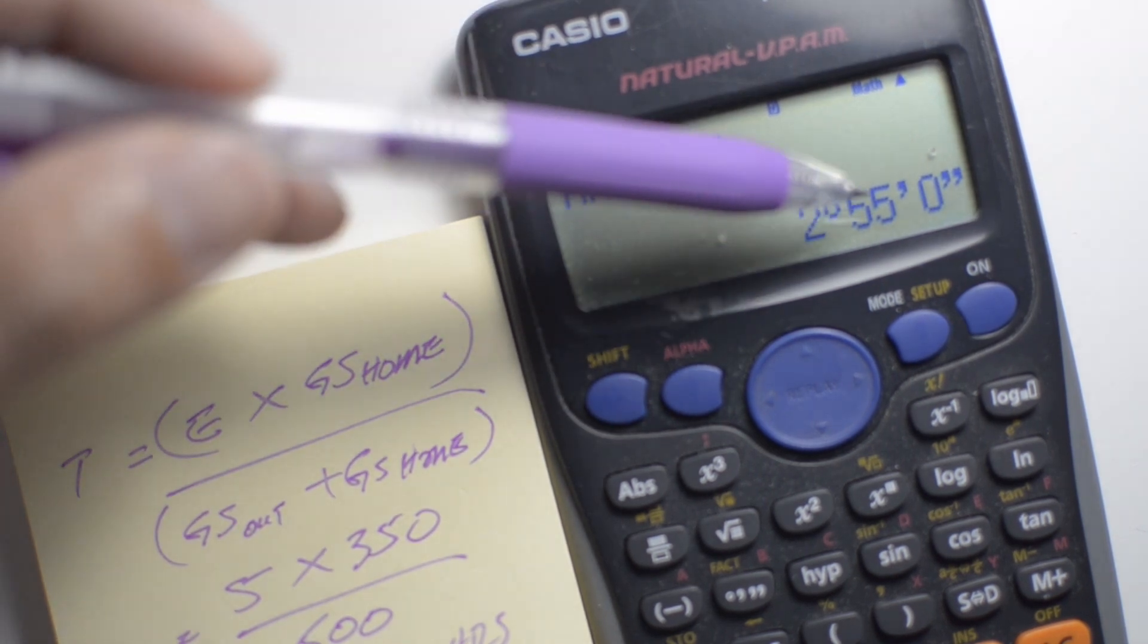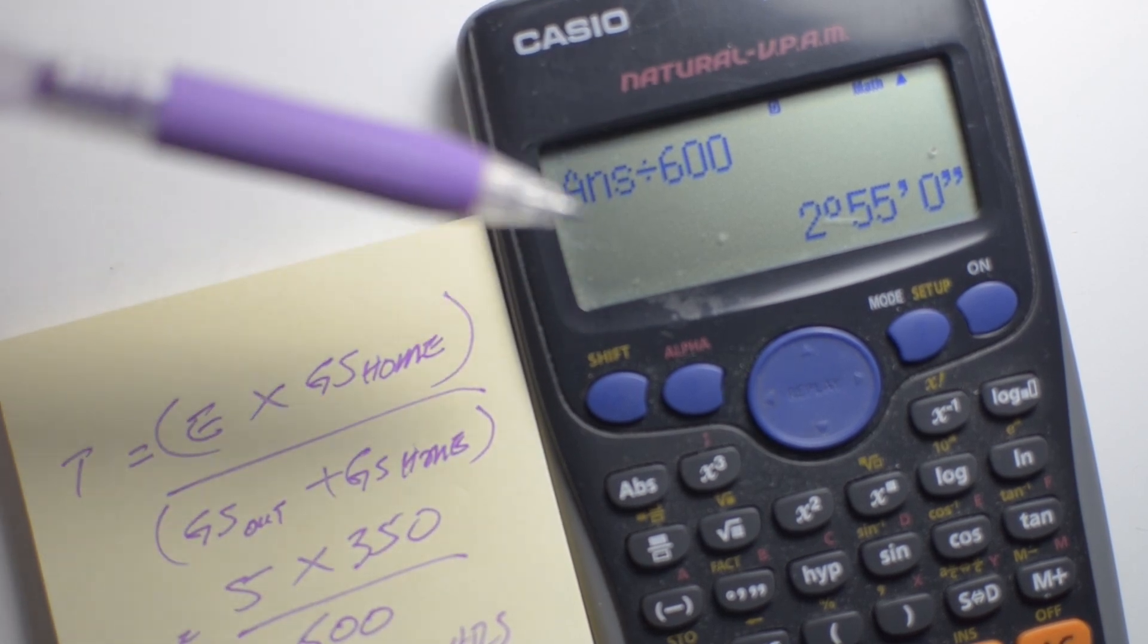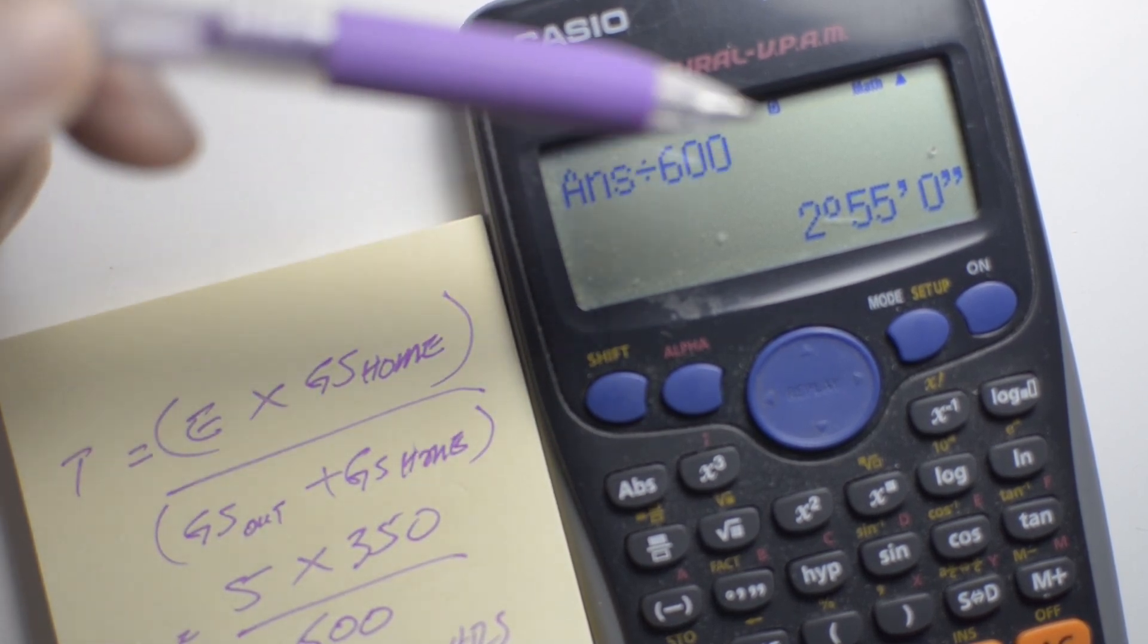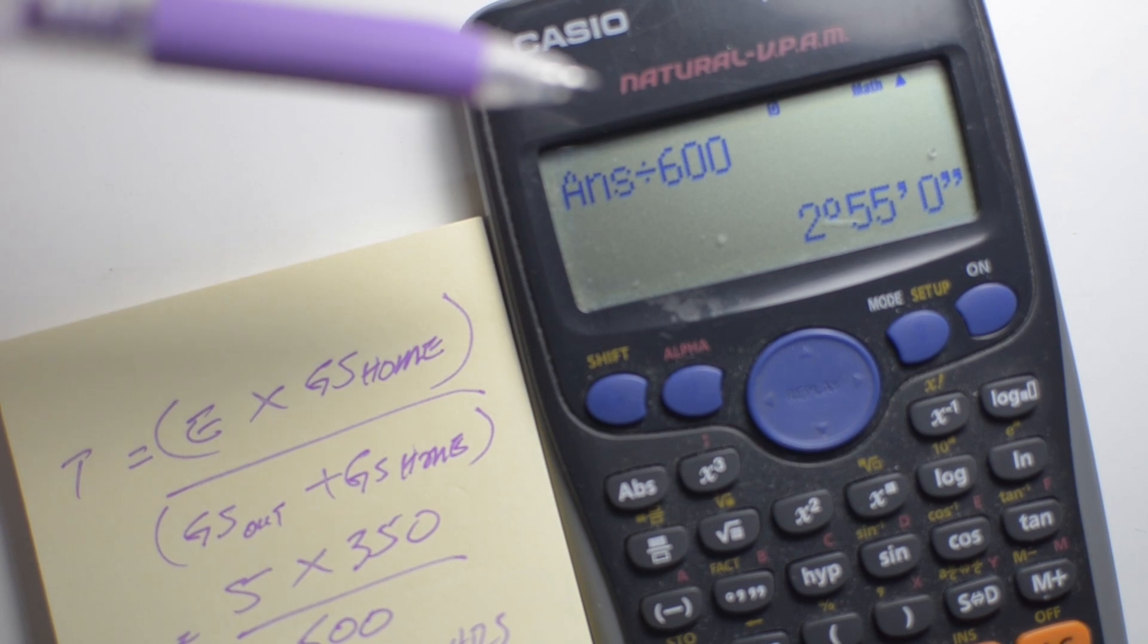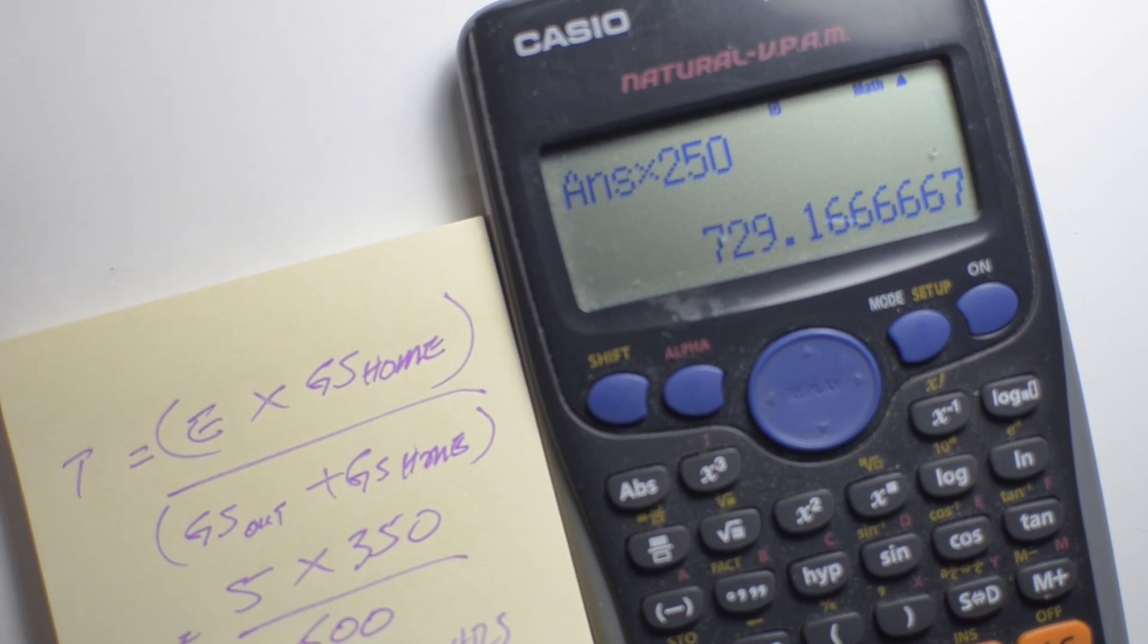if we fly 2 hours and 55 minutes at our ground speed out, which means from the departure aerodrome, and we're flying along until we reach the point of safe return, we would have reached a distance of, and I'm going to multiply that by 250, which is our ground speed out, and that will give me 729.167 nautical miles.